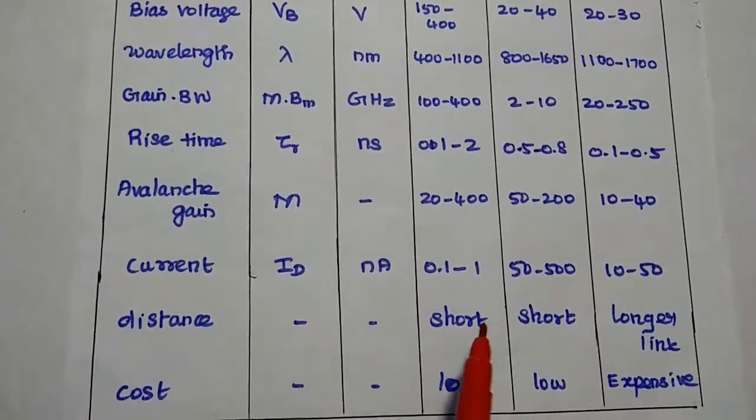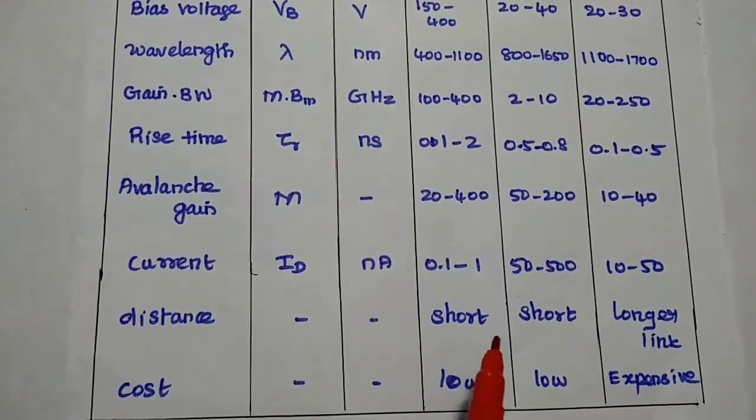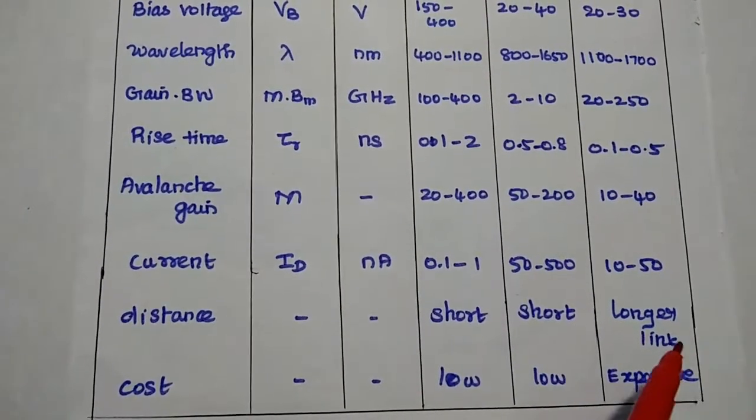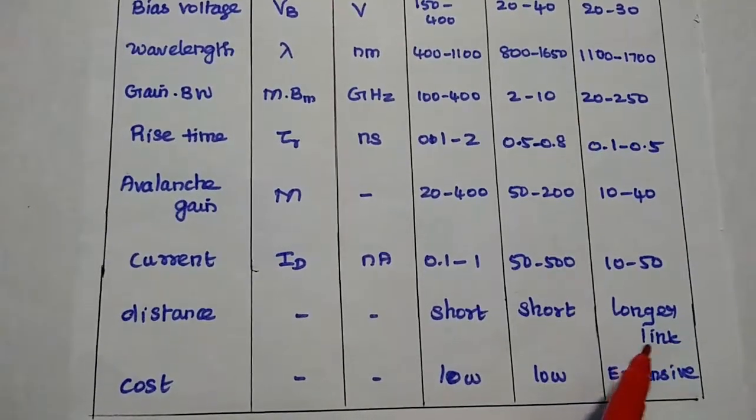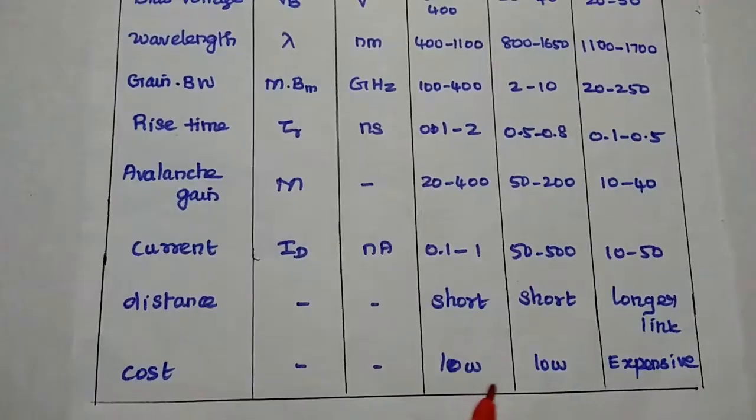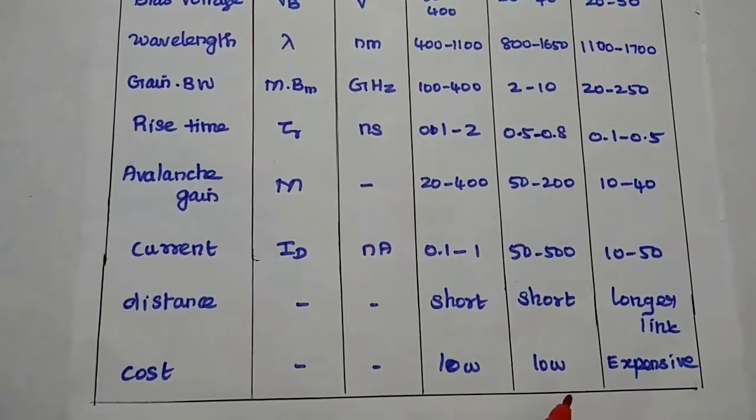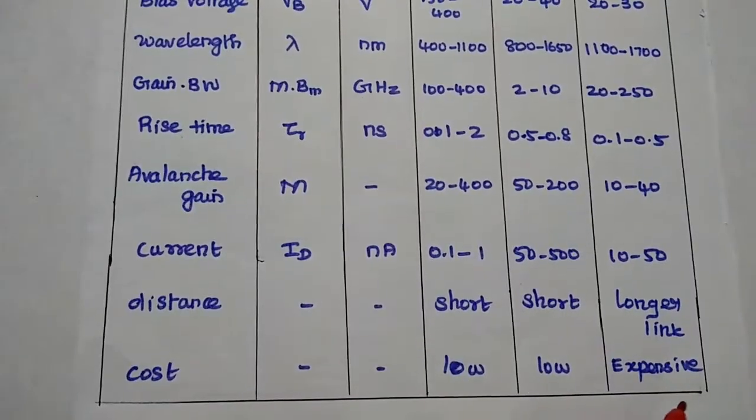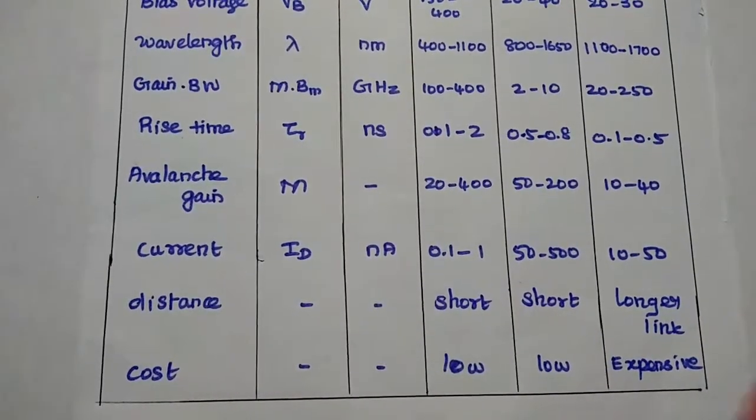So, this silicon is widely used for short distance communication, here it is only for short distance. Indium gallium arsenide is used for longer link. Then the cost is, silicon is a low cost material, germanium is also a low cost material, but indium gallium arsenide is little bit expensive.